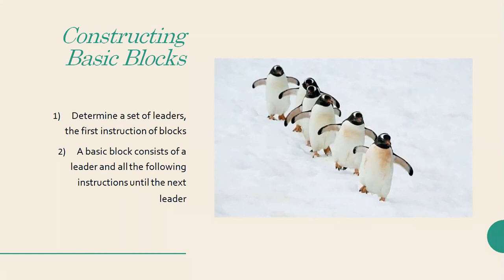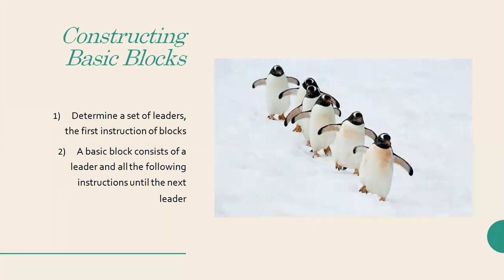The first statement is a leader. Also, the target statement of conditional or unconditional goto is a leader. And any statement that immediately follows a goto or unconditional goto is also a leader. These are the characteristics of leaders. We are using conditional and unconditional jumps - the target statement of both conditional and unconditional goto is a leader, and the statement immediately following a goto is also a leader.